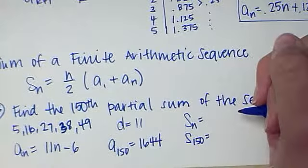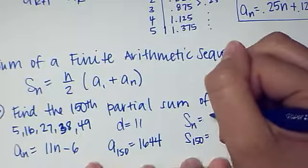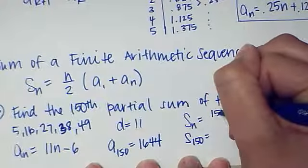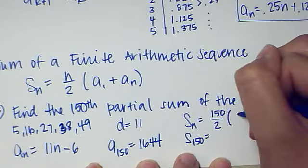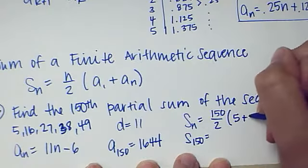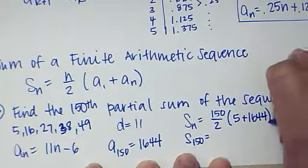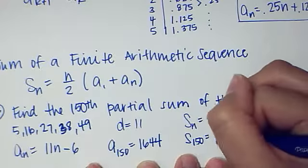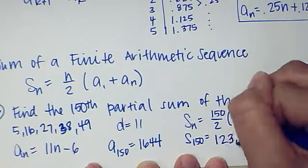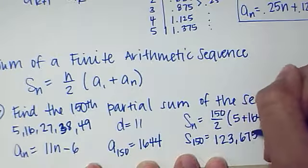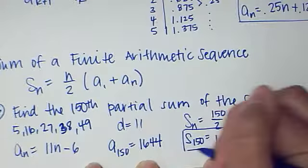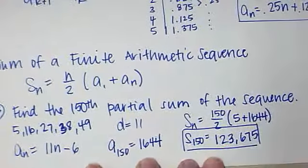The partial sum, or the finite sum of 150 is to do N, which is 150 over 2, times the first term, which is 5, plus the last term, which is 1644. And if I do that, I get 123,675. And that is the sum of the first 150 terms.